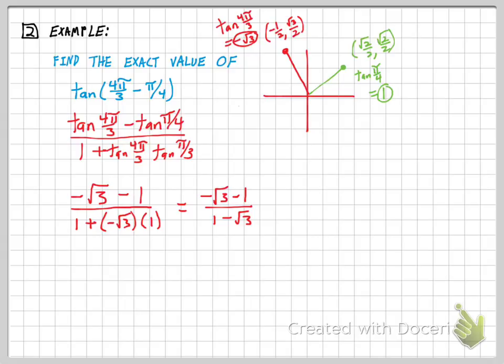However, if you remember about fractions, we want to avoid having a radical in the bottom. And so there's one more step to simplifying this, which is to multiply by the conjugate of the bottom.